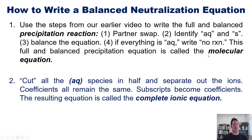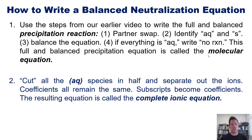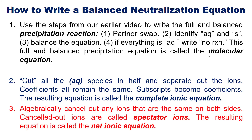We then cut all AQ species in half, separating out the ions where subscripts become coefficients. The result is called the complete ionic equation. Finally, we algebraically cancel out anything that's the same on both sides of the reaction — those are called spectator ions — and the resulting equation is called the net ionic equation.